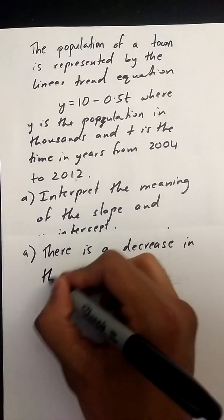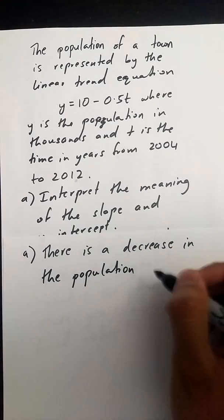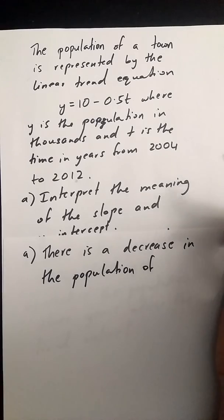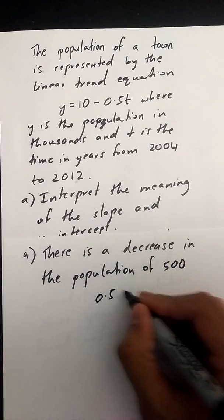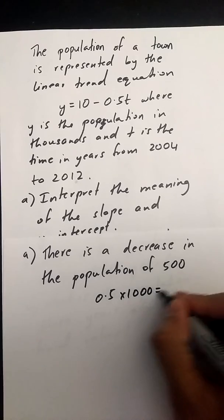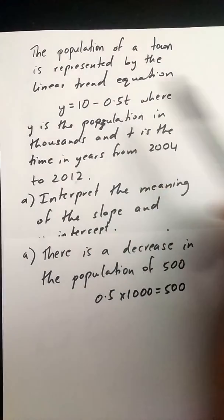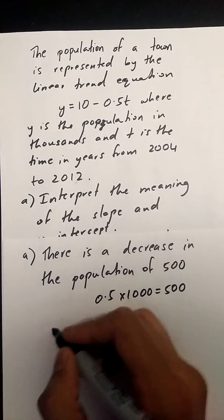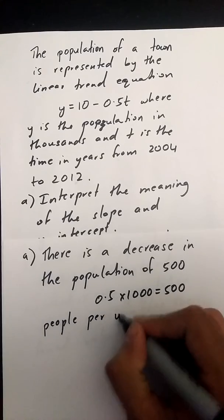in the population of 0.5 thousand, which is 500, because if you do 0.5 times 1,000, you'll get 500. So the slope of negative 0.5 means there's a decrease in the population of 500 people per year.